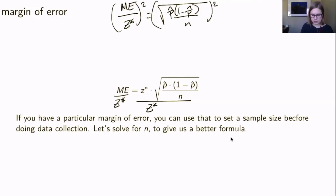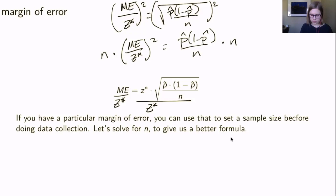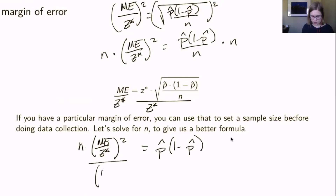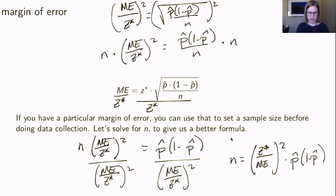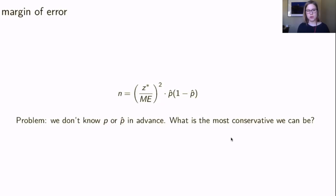Squaring both sides gives (margin of error / z*)² equals p-hat times 1 minus p-hat over n. Multiplying both sides by n and then dividing by (margin of error / z*)² gives us n equals (z* / margin of error)² times p-hat times 1 minus p-hat. That's the formula for the required sample size n.